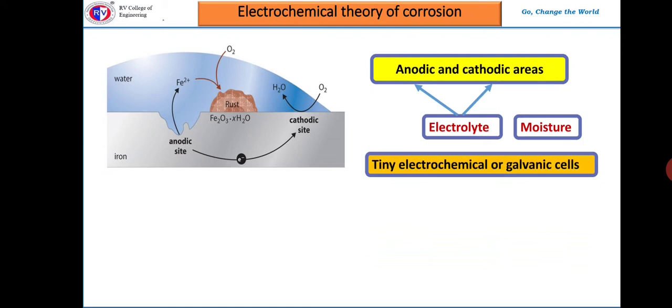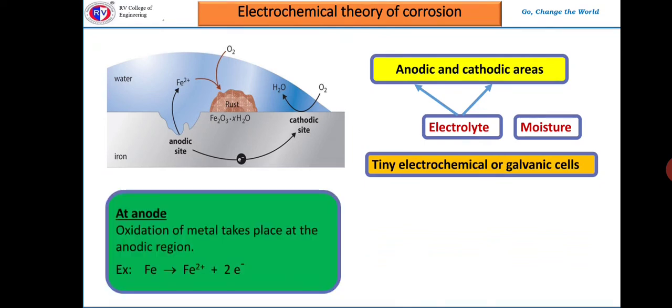Now let us see the reactions which are taking place. At anode, metal undergoes oxidation, that is corrosion, with the release of electrons. The metal ions get into the environment and electrons migrate to the cathodic areas where they are absorbed, that is reduction. If the electrons are not absorbed at the cathodic area, corrosion will not proceed.